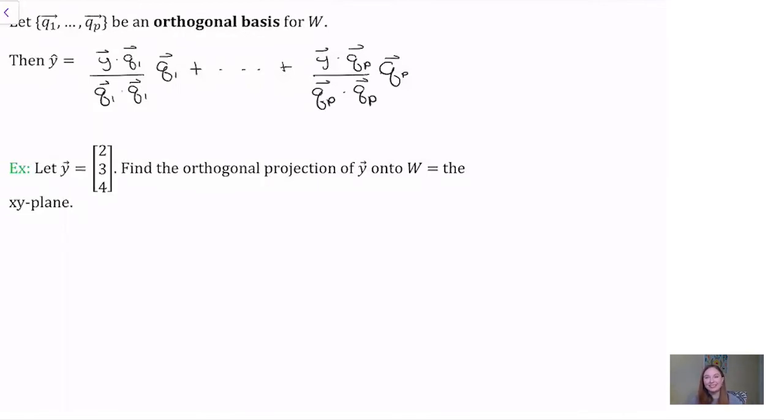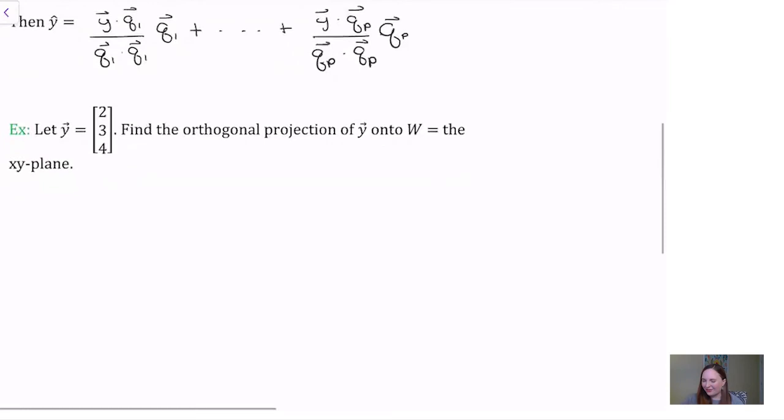Let's take a look at an example. Let y be the vector 2, 3, 4. Find the orthogonal projection of y onto w, which is the xy plane in R3.